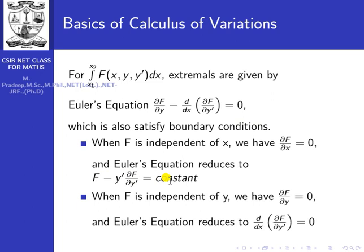The second case: when F is independent of y — meaning F is a function of x and y' only — then ∂f/∂y = 0, and the Euler equation reduces to d/dx(∂f/∂y') = 0, which gives ∂f/∂y' = constant.